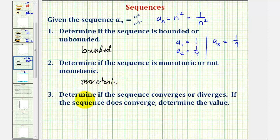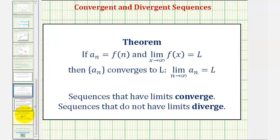For the last question, we're asked to determine if the sequence converges or diverges, and if it does converge, determine the value it converges to. There's a theorem that says every bounded monotonic sequence will converge. More formally, if a_n equals f of n and the limit as x approaches infinity of f of x equals L, then the sequence converges to L. Sequences that have limits converge to L, and sequences that do not have limits diverge.